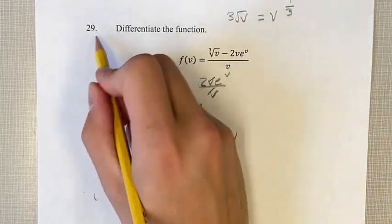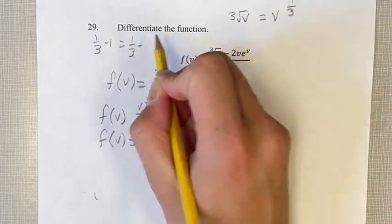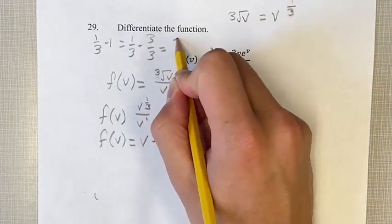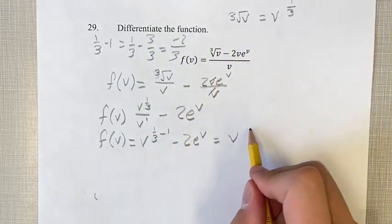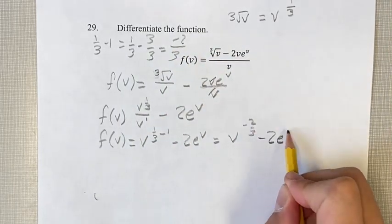Just simplifying this exponent, 1 third minus 1 equals 1 third minus 3 thirds equals negative 2 thirds. So we have v to the negative 2 thirds minus 2 e to the v.